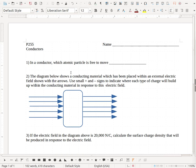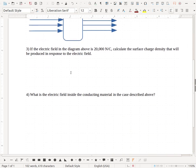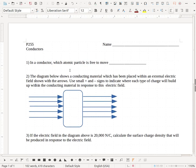So just as a quick overview, you've got four questions that you're going to be answering on this worksheet. The top one is a conceptual question. In a conductor, which atomic particle is free to move? And you're going to be filling this in with a word.